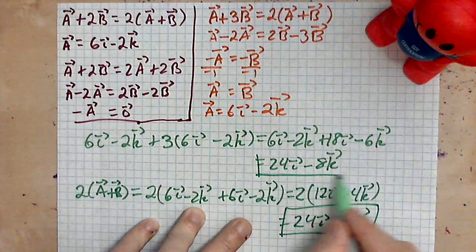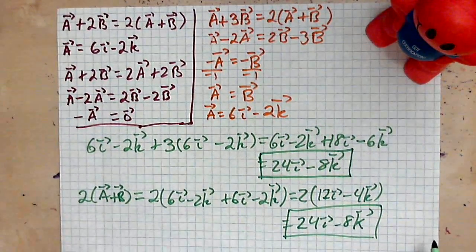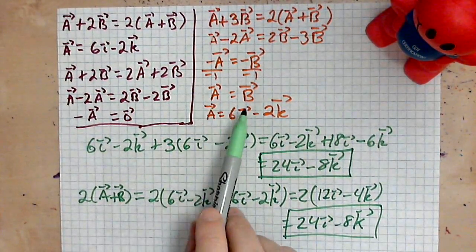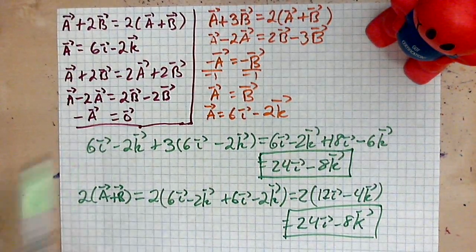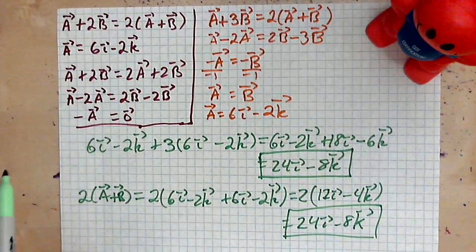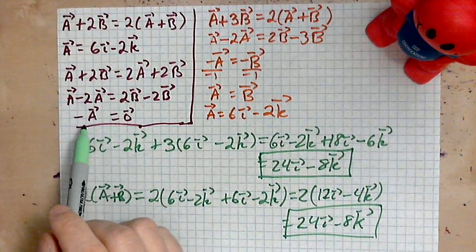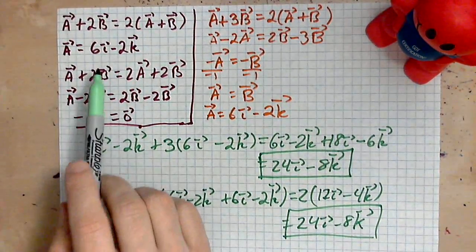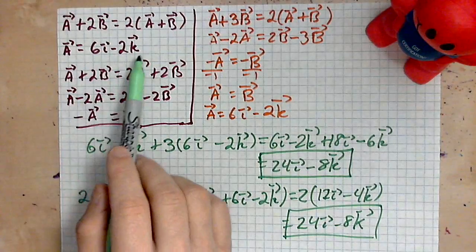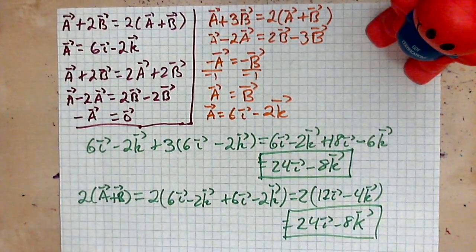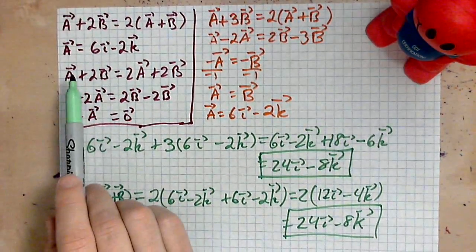So we've solved the vector equation, and in this case the vector b has to be equal to the vector a. And in the purple case here, the first one, there was no solution because we found that negative a, which is the negative of 6i minus 2k, that can never be equal to zero, so this first one had no solution.